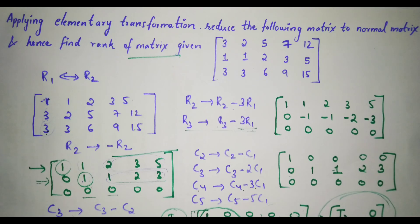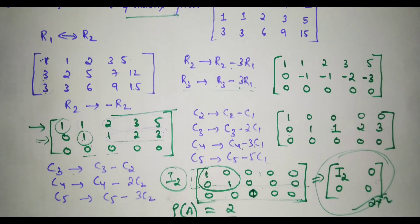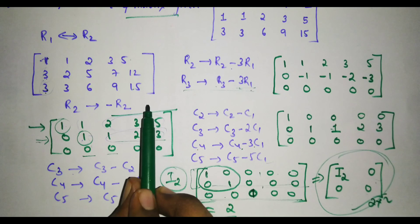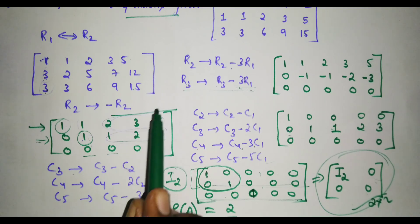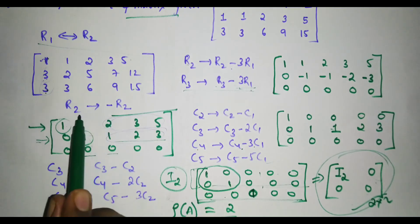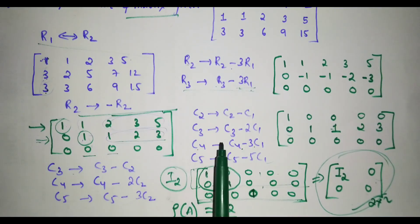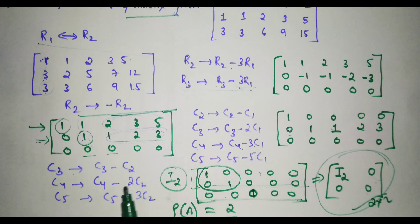Always remember: after starting row transformation, once you stop and begin column transformation, you should not go back to row transformation again in between the column transformations. Observe that we started with row transformation, stopped, and then did all column transformations without mixing them.